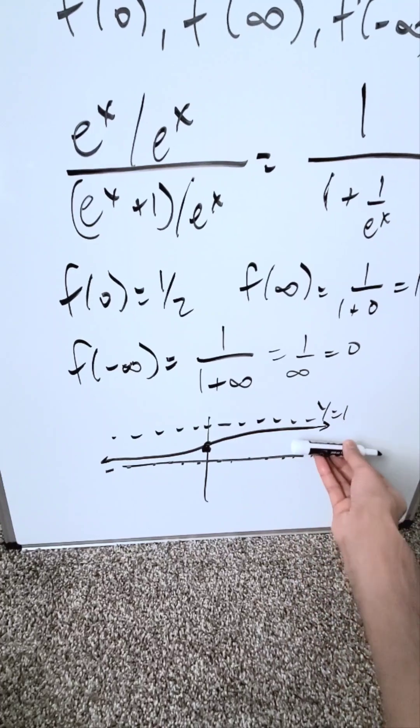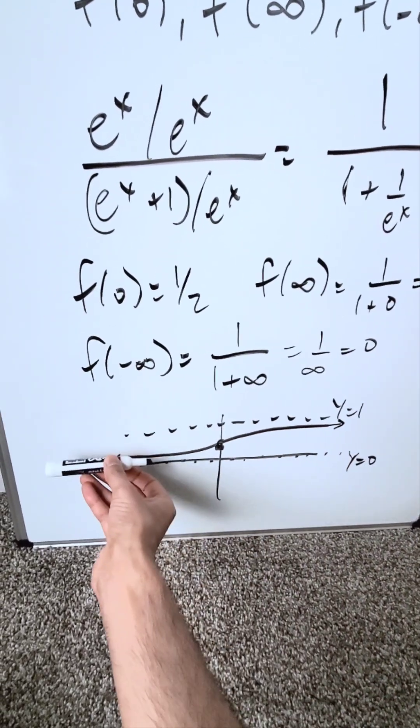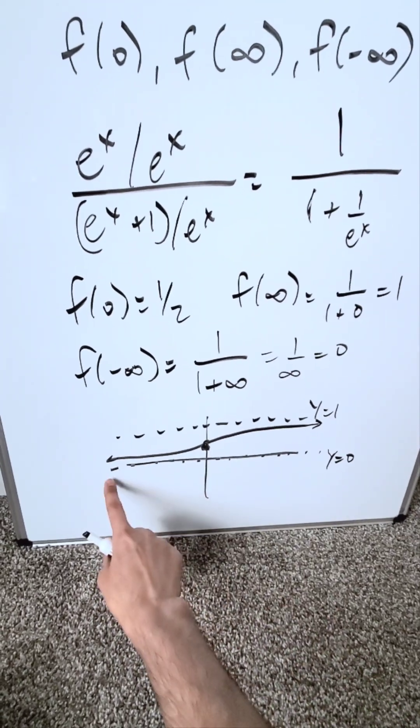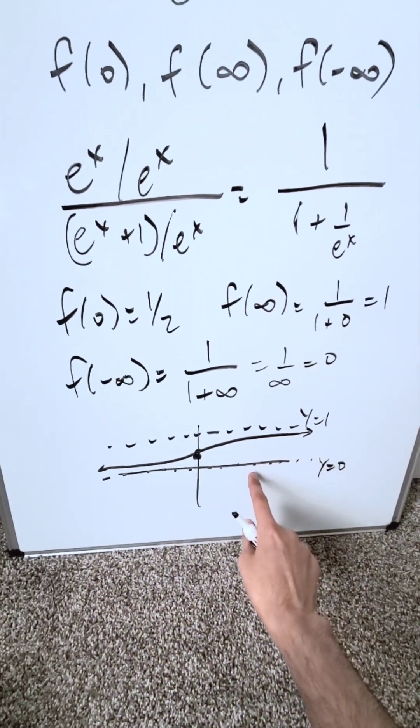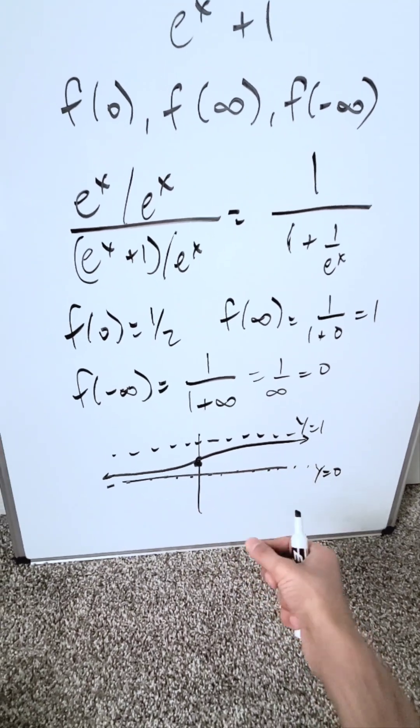As you approach the values of infinity, you're going here to the upper asymptote. As you're approaching the values of negative infinity, you're coming here to the lower asymptote. Your domain here is minus infinity to infinity. Your range is 0 to 1, but not including 0 and not including 1, and it's done.